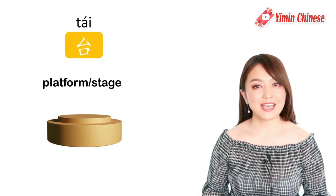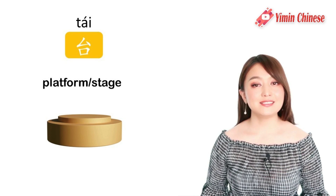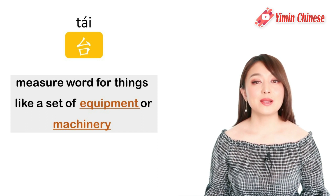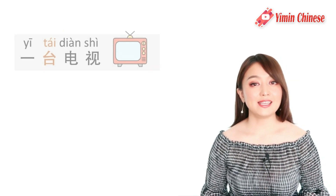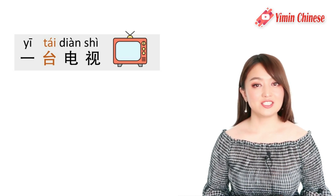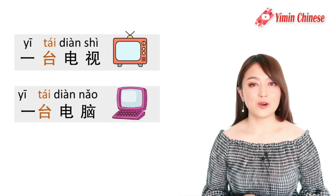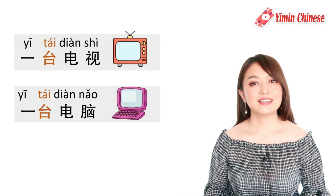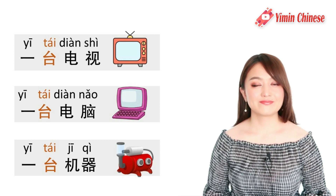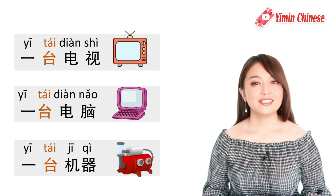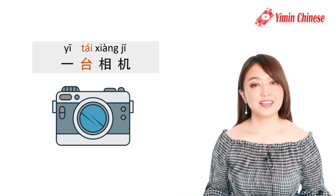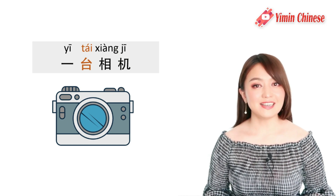That's why we use 台 as a measure word for things that have the form or shape of a platform or stage, to describe things more vividly. For example: 一台电视, a TV set; 一台电脑, a computer; 一台机器, a machine; 一台相机, a camera.